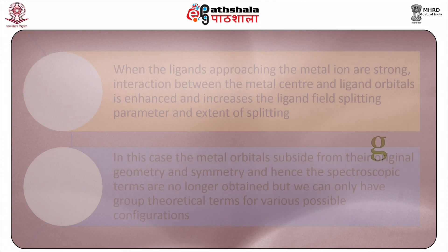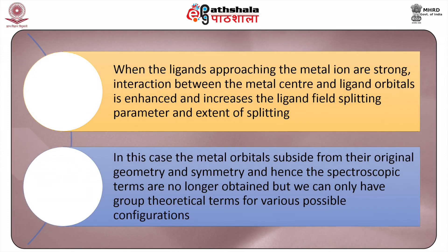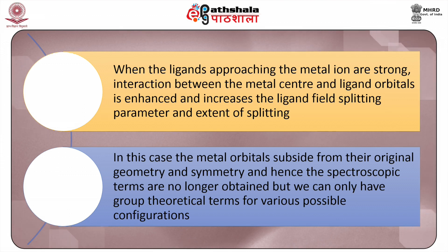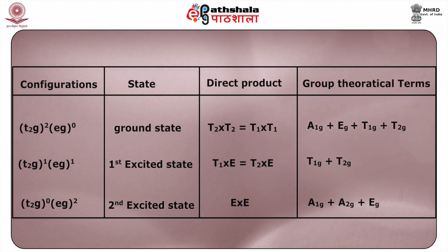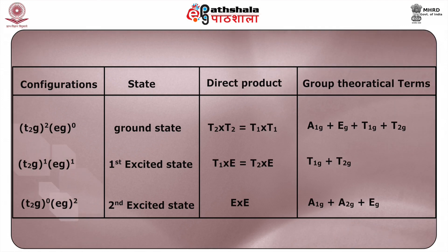In case of strong field splitting, when strong ligands approach the metal ion, the interaction between the metal center and the ligand orbitals is enhanced, increasing the ligand field splitting parameter and the extent of splitting. In this case, the metal orbitals subside from their original geometry and symmetry, and hence the spectroscopic terms are no longer obtained. We can only have group theoretical terms for various possible configurations. The group theoretical terms are obtained by using the direct product of the occupied orbitals. This strong field approach is very useful in assigning the order of energy to each group theoretical term.